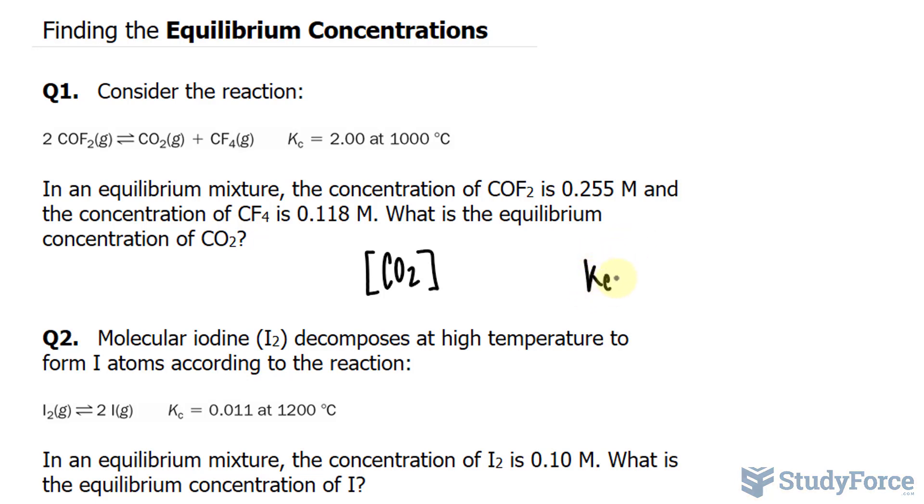So I'll write down that Kc is equal to the concentration of the products, so we have CO2, its concentration, that's what we're looking for, times the concentration of CF4, and luckily for us, our equation is already balanced because it needs to be balanced before we do this, and this is being divided by the concentration of COF2, and that will be raised to the power of 2 because of the coefficient 2.